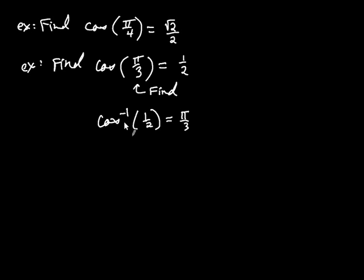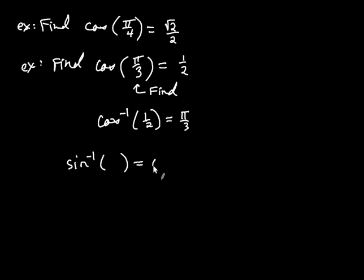You might be thinking: there are lots of angles such that cosine of the angle is 1 half — after all, there are infinite angles. How do you know to look for pi over 3? That's a very good observation. What we've agreed upon is that when you have inverse sine of something and you come up with the angle theta, the angle lies between negative pi over 2 and positive pi over 2.